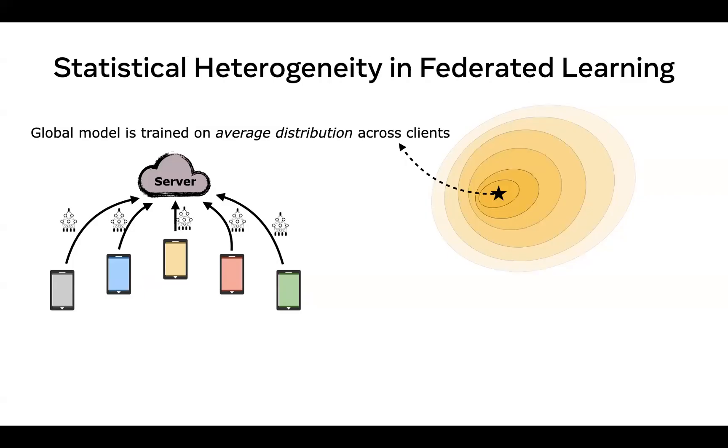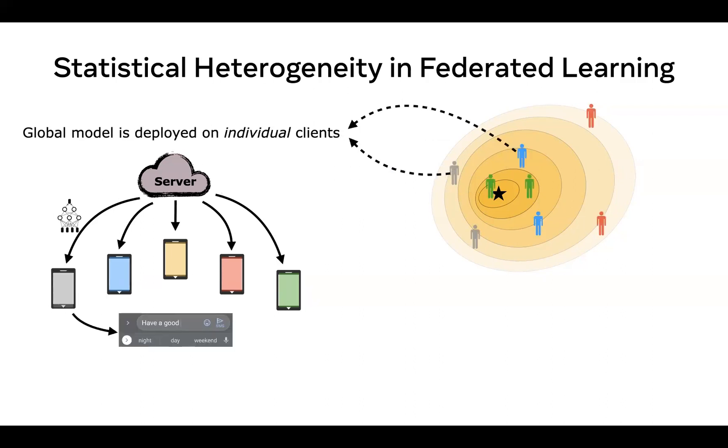In typical federated learning situations, we aim to minimize the average loss across all the clients. The goal of this optimization is to achieve good performance on the average data distribution across all the clients. This is typically done in practice with algorithms such as federated averaging. Once a global model is trained, it is then deployed on individual clients, for instance, to make next word predictions on mobile keyboards. This is shown in this particular illustration here.